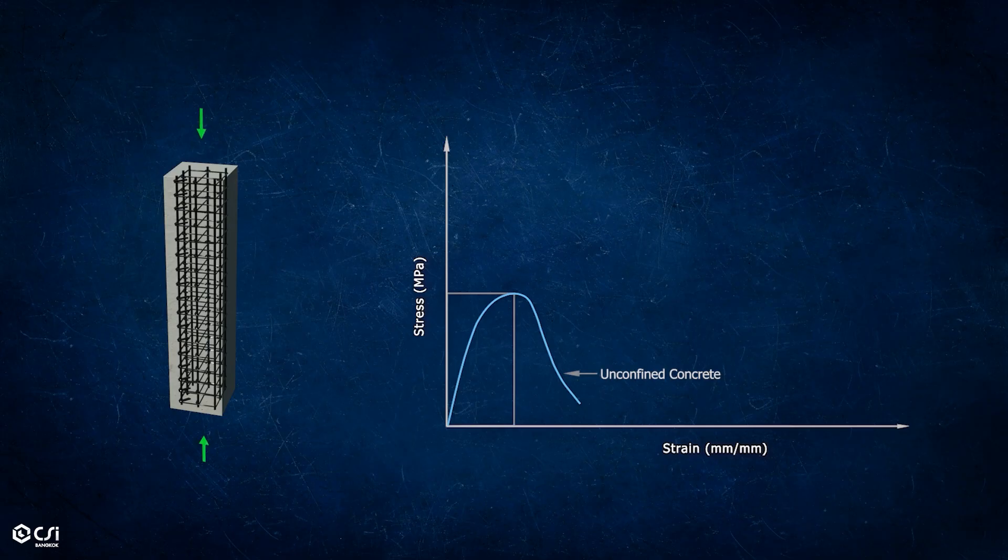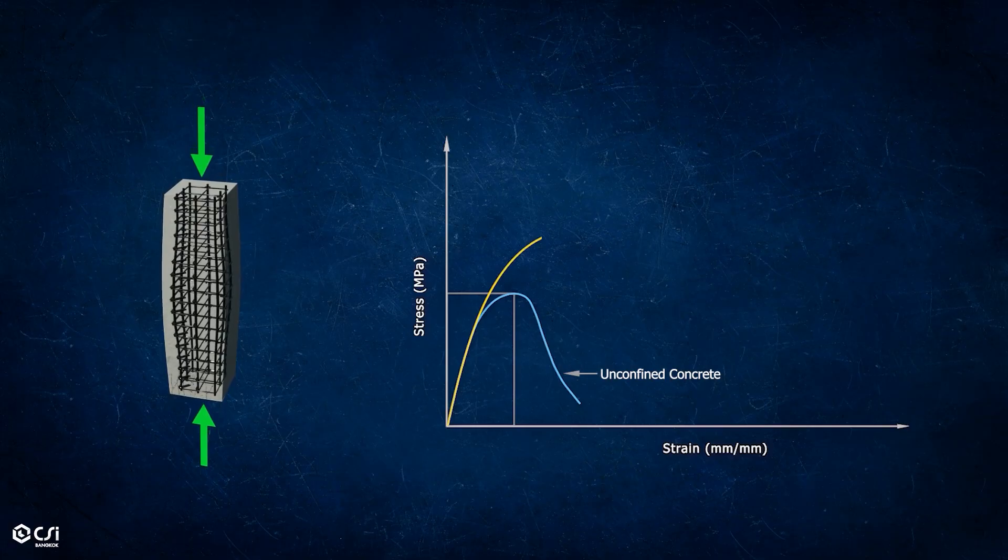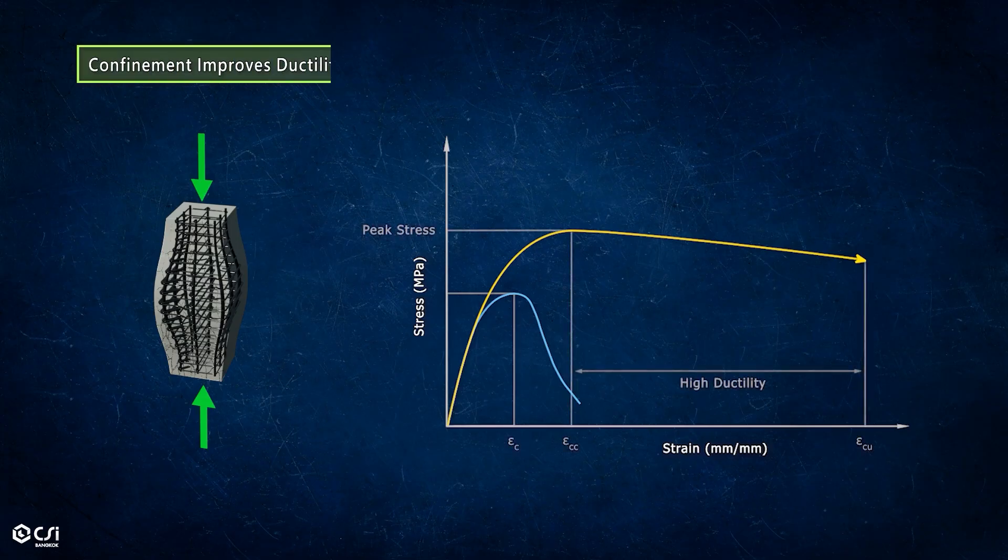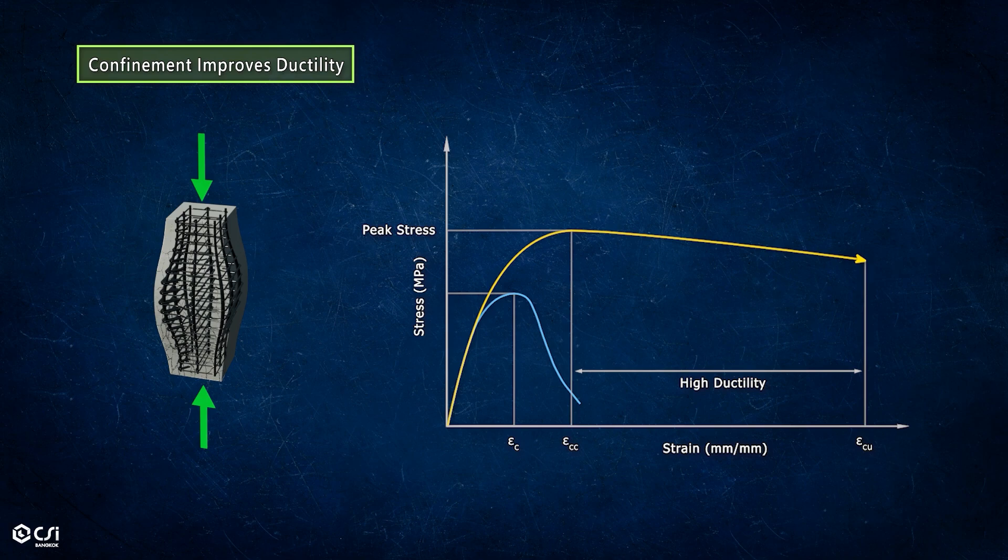This confinement significantly increases the column's ability to carry larger compressive loads without breaking suddenly. This is often called increased ductility due to the confining effect. Confinement significantly improves ductility.